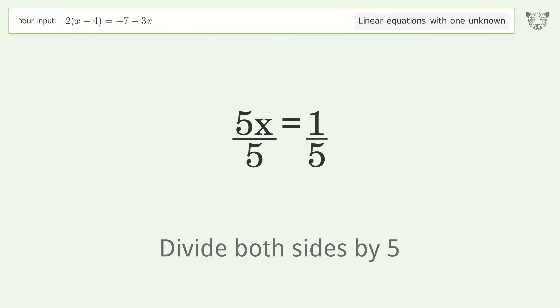Isolate the x. Divide both sides by 5. Simplify the fraction.